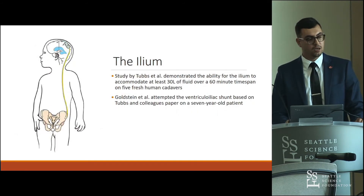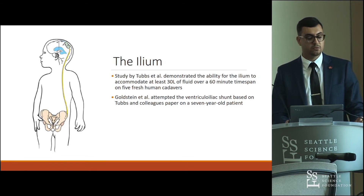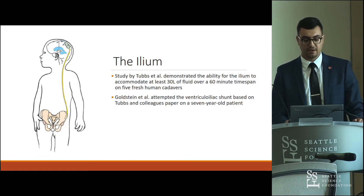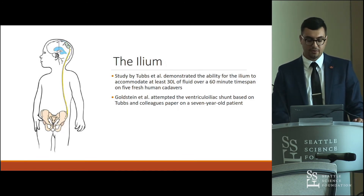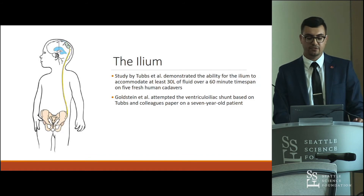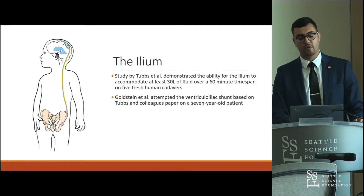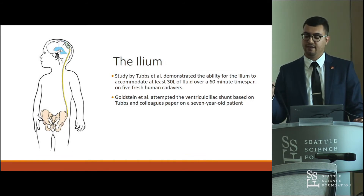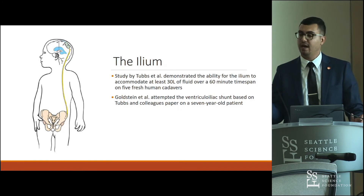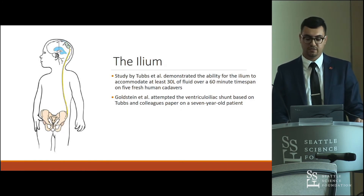The ilium is another potential receptacle site. Tubbs and colleagues demonstrated it could also handle 30 liters of fluid over 60 minutes without any leaks. Interestingly, a letter to the editor by Goldstein et al. attempted the ventriculoiliac shunt that Tubbs had proposed. It didn't succeed, but not because of the protocol itself — they believe the distal portion of the catheter came loose due to insufficient bone wax, not a flaw in the underlying approach.